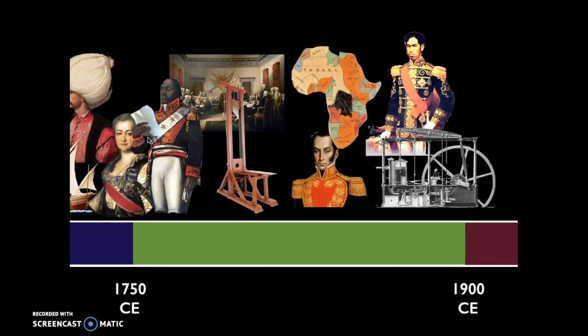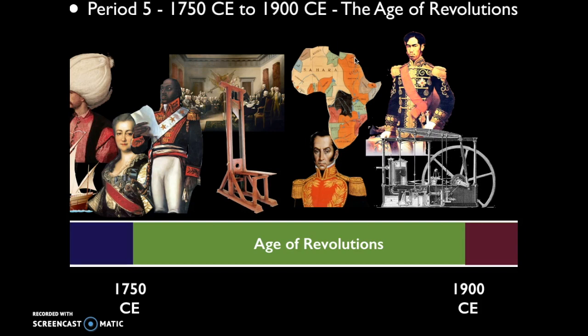From 1750 to 1900, we'll talk about the Age of Revolutions. The major transformation here is the Industrial Revolution, which is going to impact everything on a global scale. We'll also cover political revolutions like the American Revolution, the French Revolution, the Haitian Revolution, and various Latin American revolutions. We'll discuss how many people responded to the Industrial Revolution — like the Japanese with their Meiji Restoration, or the Ottomans' response — and how Europeans carved up Africa during the Scramble for Africa and pursued imperialism in Africa and parts of Asia. That's Period 5, representing 20% of the AP test.